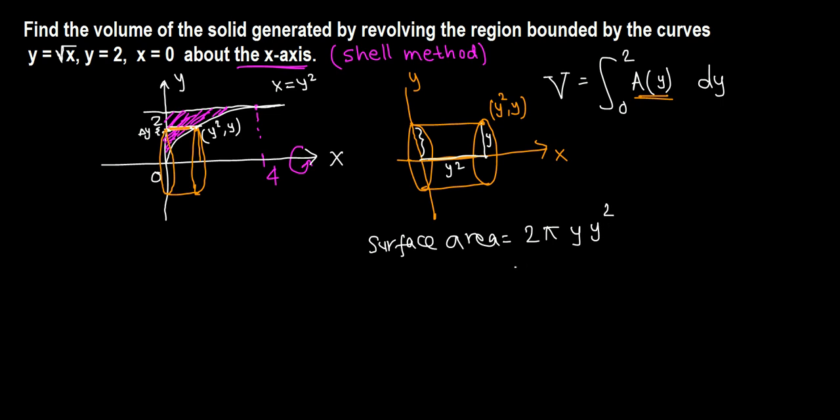Let's simplify. This is 2πy and y squared is y to the third. Now we're going to find this definite integral to find the volume of this solid of revolution. Thus V equals the integral from 0 to 2 of 2πy cubed dy.